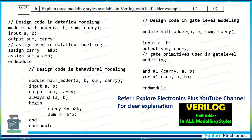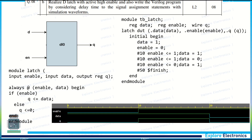Explain three modeling styles available in Verilog with a half adder example. Write the truth table and block diagram for the half adder — don't write the gate-level circuit, just the block diagram. Data flow modeling, gate-level modeling, and behavioral modeling codes are all given here for the half adder.